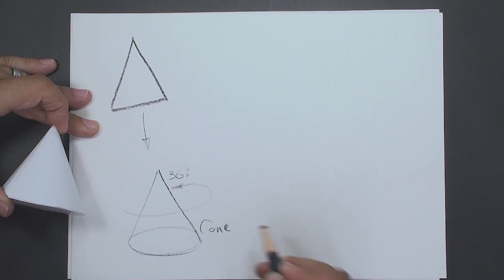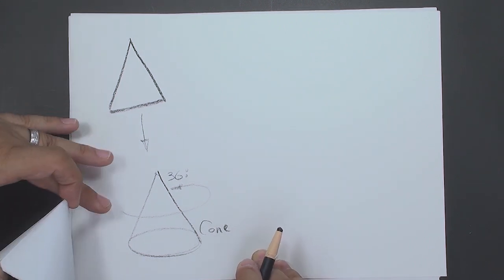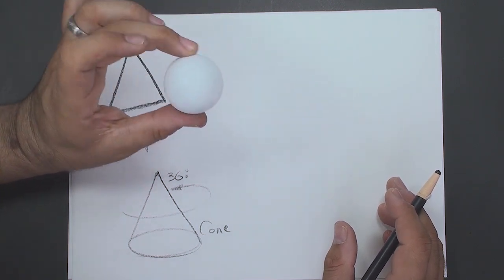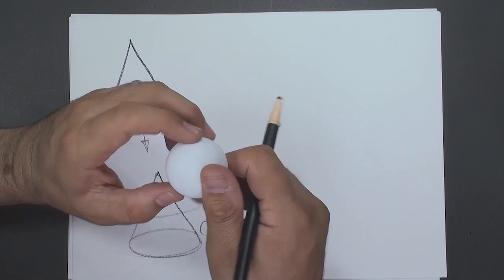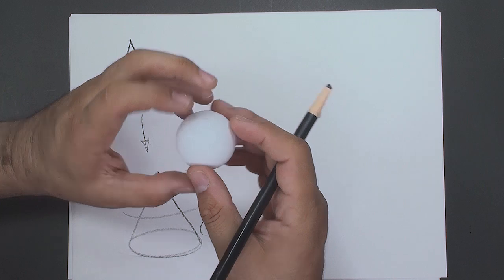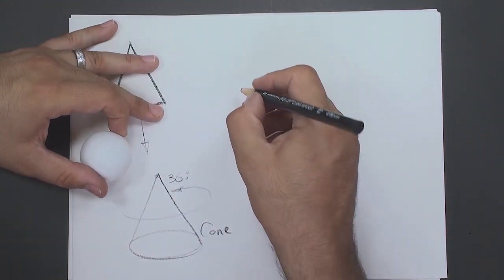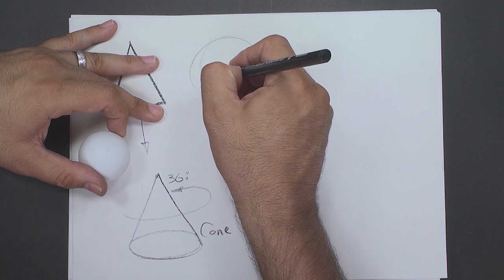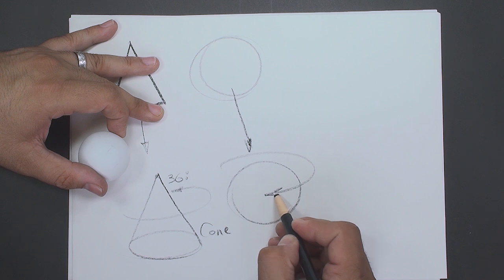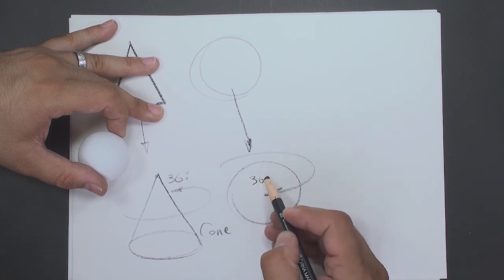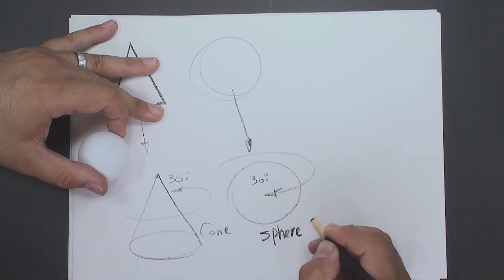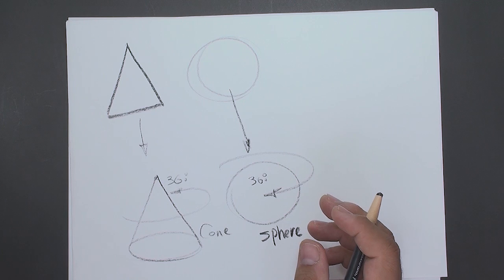The next volume is sphere. The spheres are similar to the ball and are completely spherical and can be seen in any direction. Spin the sphere and touch its volume - it's spherical in all views. If I rotate the circle 360 degrees, a sphere is made. Most sports balls are in the shape of the sphere.